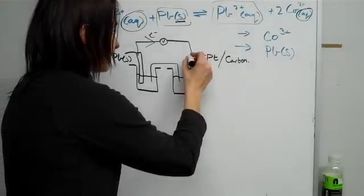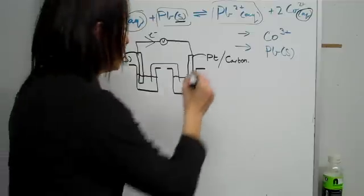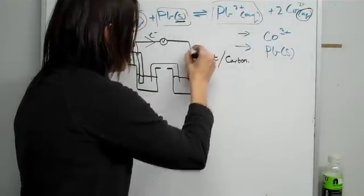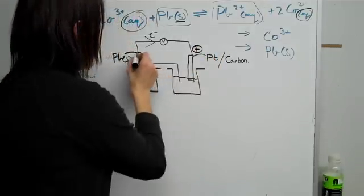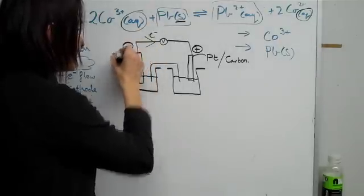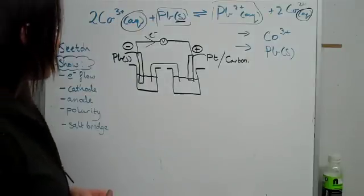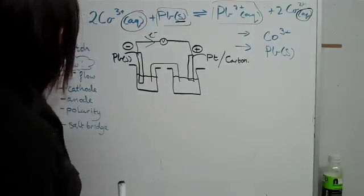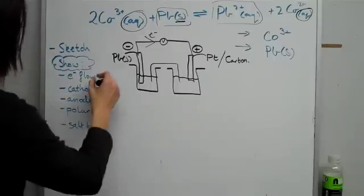So this half cell, for the electrons to actually be motivated to get there, it has to be positive. And this half cell here, because one electron's there, that will be negative. So far, we have shown the electron flow.